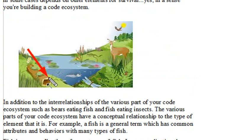So in addition to the interrelationships of various parts of your code ecosystem, like a bear eats a fish and a fish eats insects, there are various parts of your code or your ecosystem that have conceptual relationships as well. For example, a fish is a general term which has common attributes and behaviors with many types of fish. And this is called a generalization.